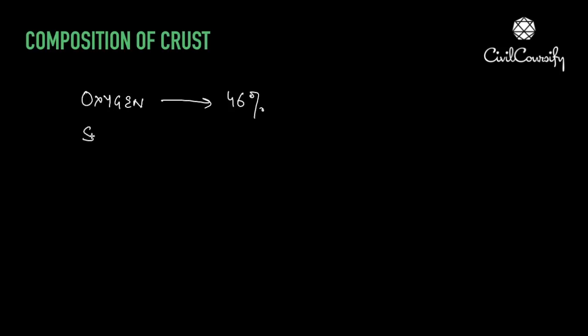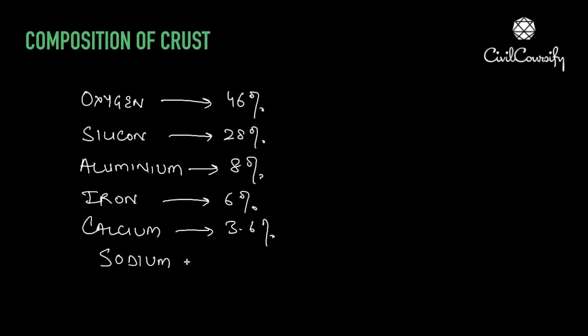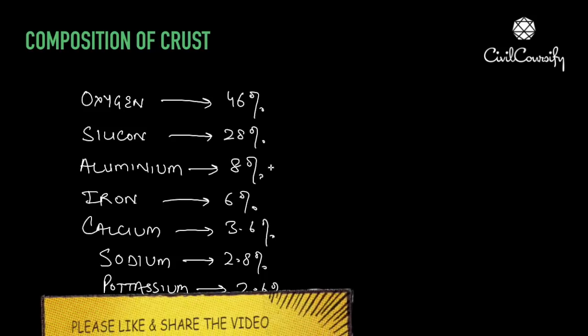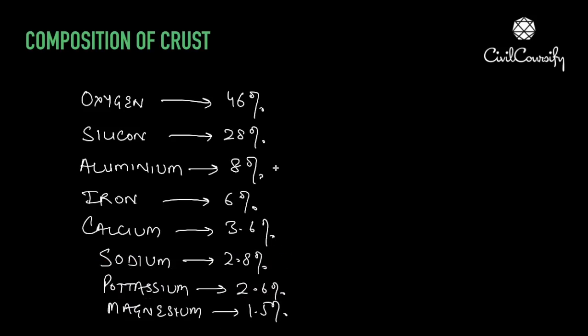Finally, let's look at the composition of the crust. The crust has 46% oxygen, 28% silicon, 8% aluminum, 6% iron, 3.6% calcium, 2.8% sodium, 2.6% potassium, and 1.5% magnesium. So this was all about the interior of the earth — the various layers, their features, and some important facts you should know about the earth's interior.